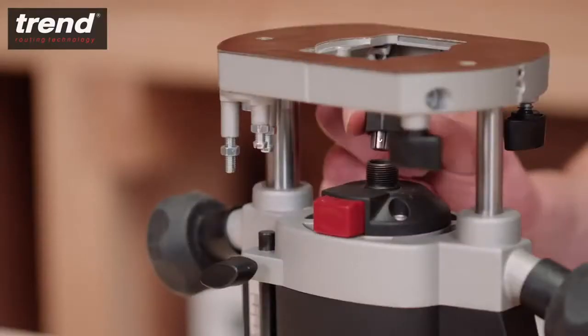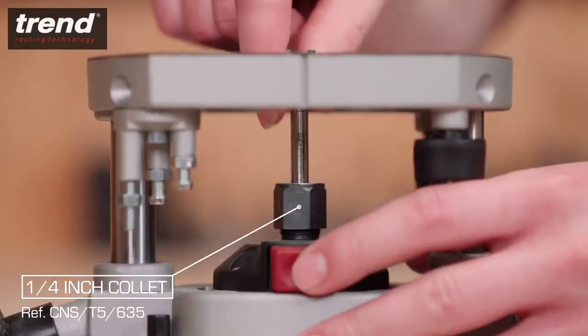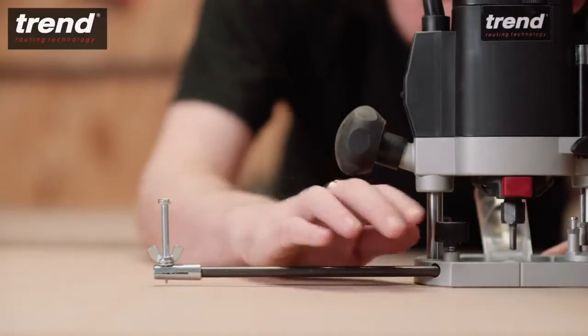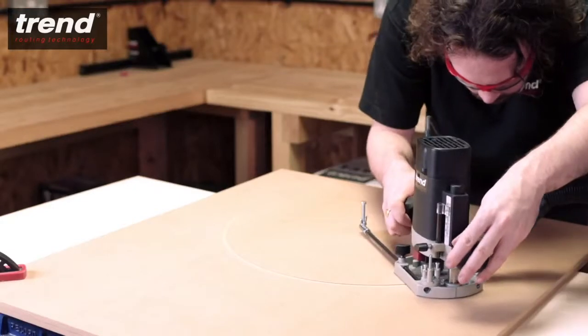Also included with the router is a quarter inch multi slit collet, a 20mm guide bush and a beam trammel attachment for cutting curves and circles.